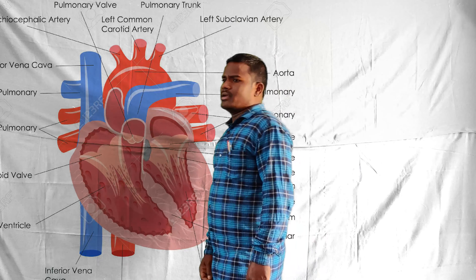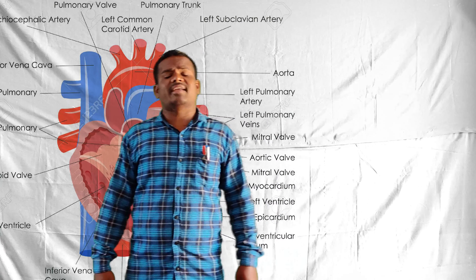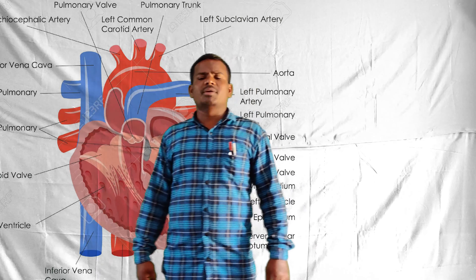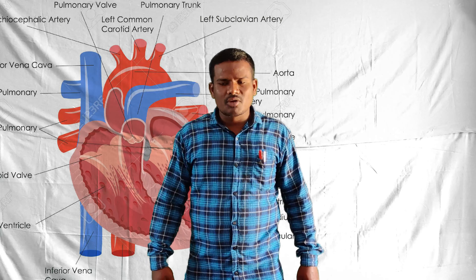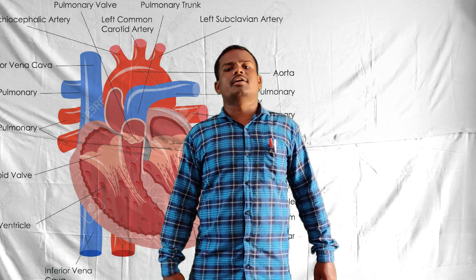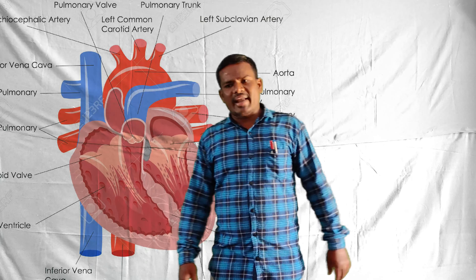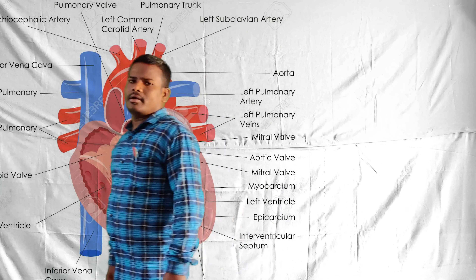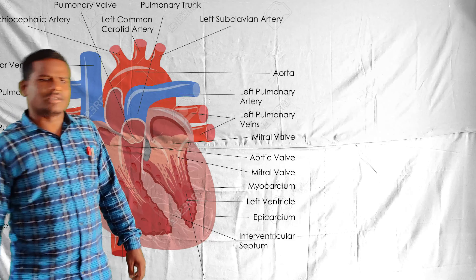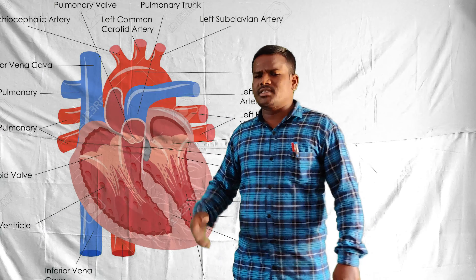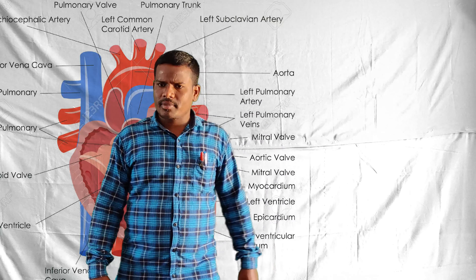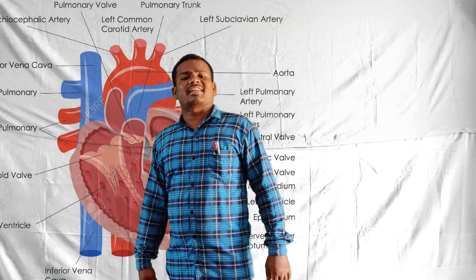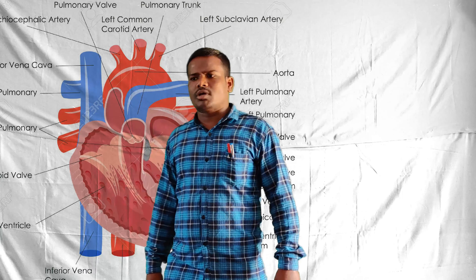Blood - we learnt about this in ninth class. Blood is a fluid and a connective tissue. It gives connection between groups of organs. It appears red in color due to the presence of hemoglobin. Approximately five to six liters of blood is present in a person.